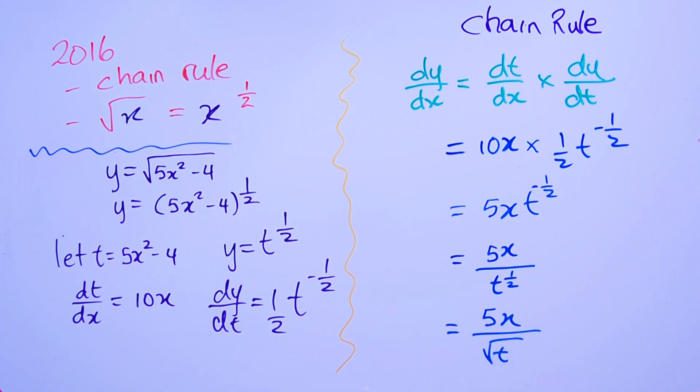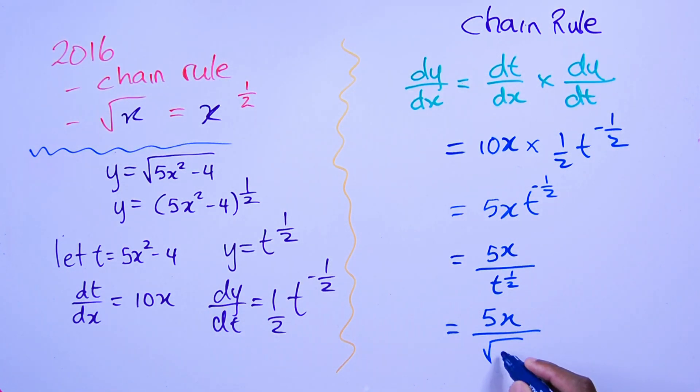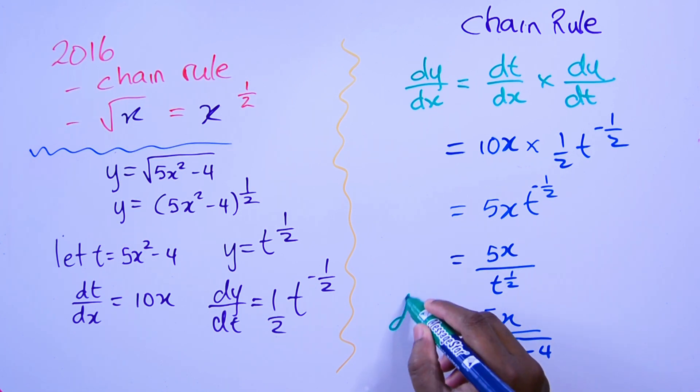We'll finish it off by just putting this back in its square root form like that. But t is really 5x² - 4, right? So we can actually drop it back like that for the final solution. That's the final solution of dy/dx.